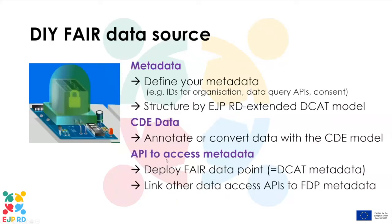For a do-it-yourself FAIR data source, you need metadata — the description about your resource — including the identifier for your organization, the APIs you have, and the consent policies you can refer to. We propose for the EJP to structure this with the data catalog vocabulary, DCAT, which is an internationally often-used model for structuring such information. Then for common data elements, there's annotating or converting your own data with that model so it can be expressed in terms of the shared common data element model. The third element is the API to access that metadata — deploying a FAIR data point — and by doing that you're deploying the DCAT model as part of it.